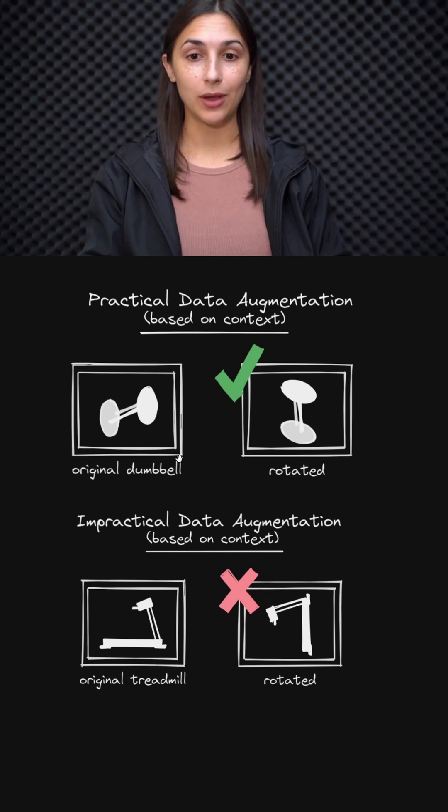So then in our training set, we would have images both of horizontal and vertical dumbbells. And that seems to be a reasonable augmentation or modification.